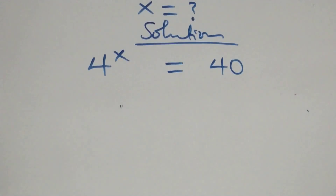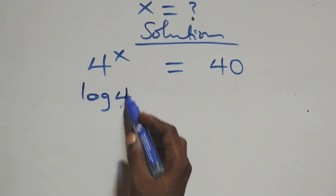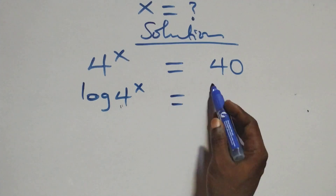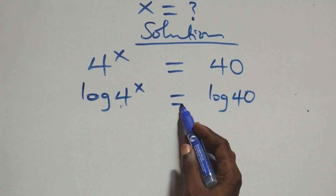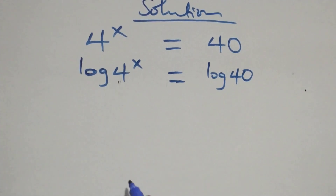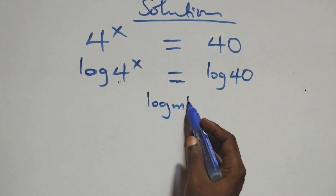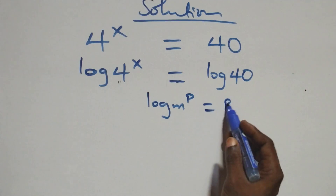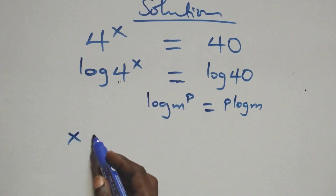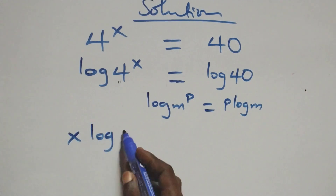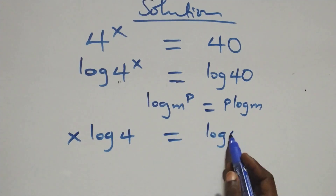Here we take the log on both sides, that is we have log four raised to the power x equals to log forty. The next step, we apply the power rule of logarithms: log m raised to the power p is the same as p log m. So what we have becomes x log four equals to log forty.